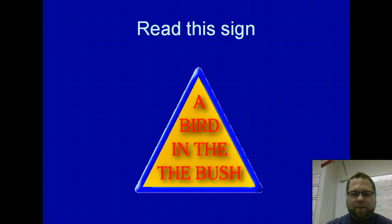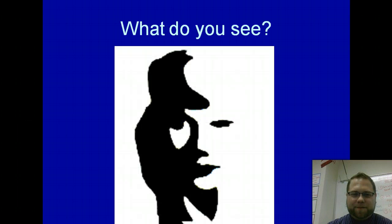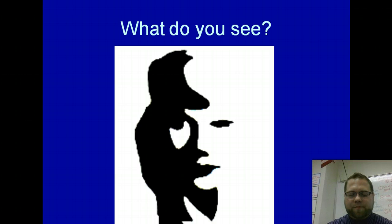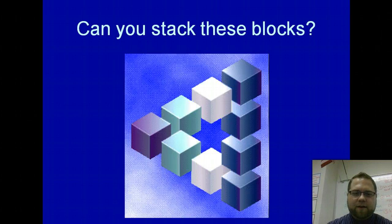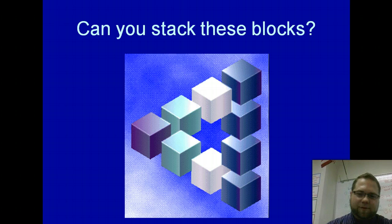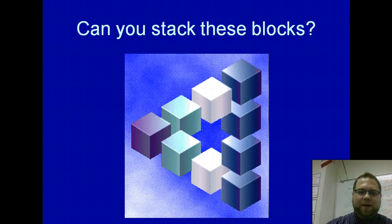Read the sign: 'A bird in the bush.' What do you see here? You can see a guy playing a saxophone. You can see a woman's face — kind of the negative of a woman's face. It's kind of M.C. Escher-ish. You need to Google M.C. Escher if you want to know what that's referring to.